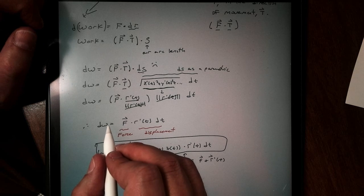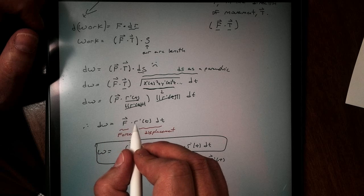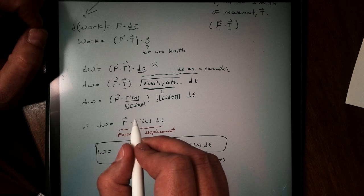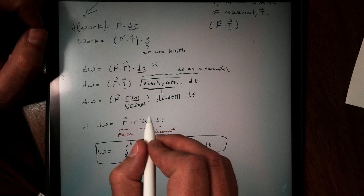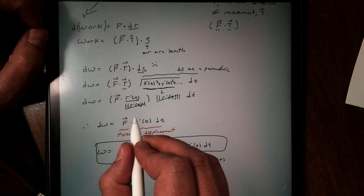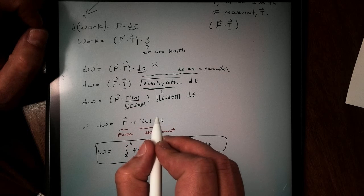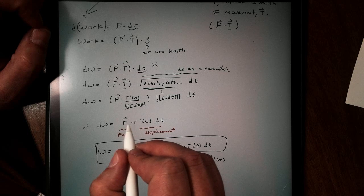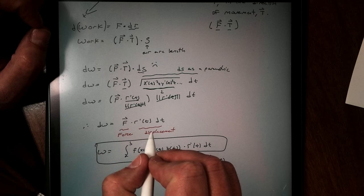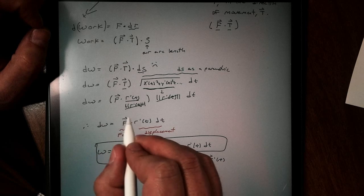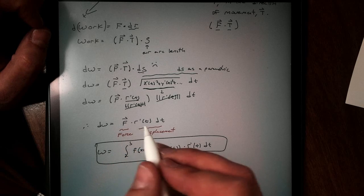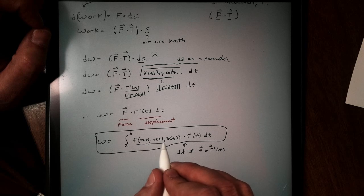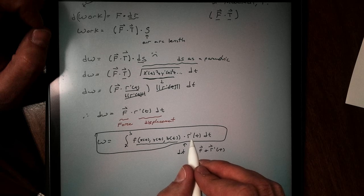And what I am left with is my new work equation: F dot r prime of t dt, where this r prime of t, if we think of it this way, this is my rate that we're traveling. Remember, r of t is my position, so r prime of t would be my rate of change in position. And dt is my incremental time change. So this is going to give me my displacement, and I'm multiplying it by my vector force. So we have our force times displacement equation. So there's dw.